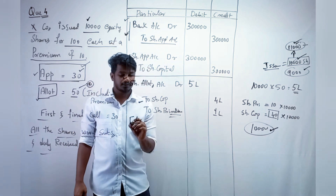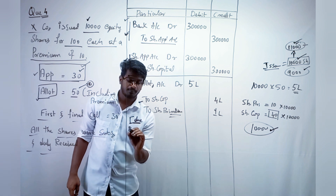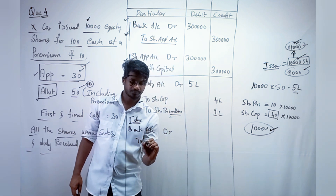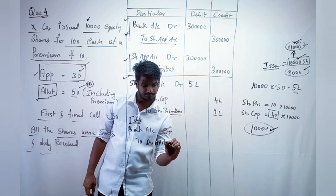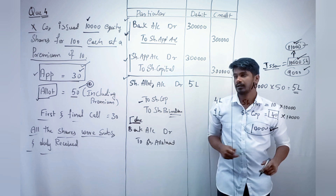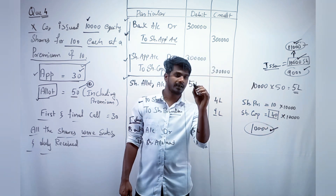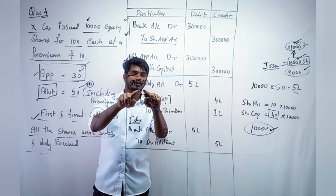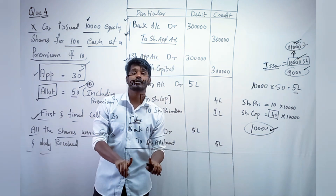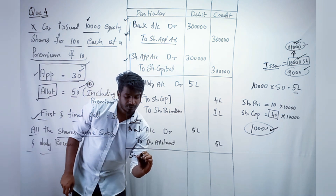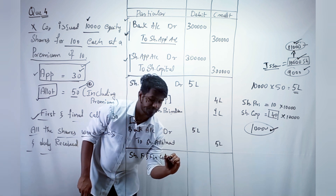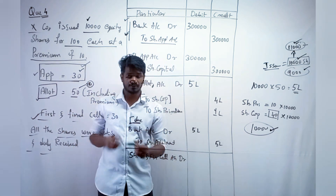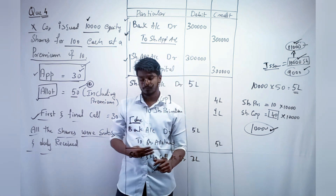After the due entry, we do the bank entry: bank account debit, to share allotment — 5 lakh rupees including premium. Next, for the first and final call, we simply change the name. Share first and final call account debit — 30 rupees into 10,000 equals 3 lakh rupees.